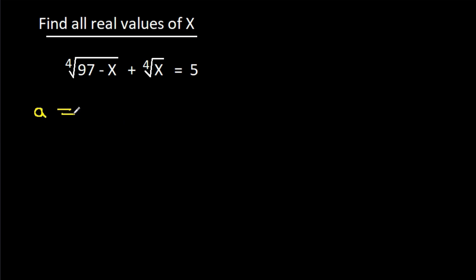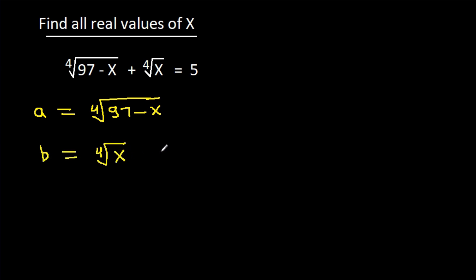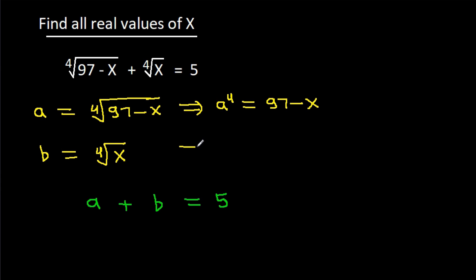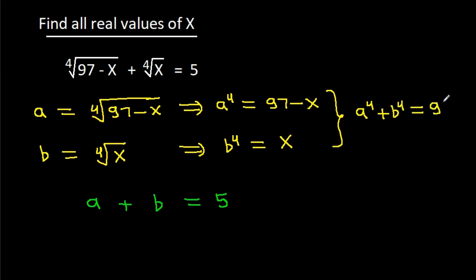Suppose a is equal to the 4th root of (97 minus x) and b is equal to the 4th root of x. Then a plus b is equal to 5. From here we can get a to the power 4 is equal to 97 minus x, and b to the power 4 is equal to x. So a to the power 4 plus b to the power 4 is equal to 97.